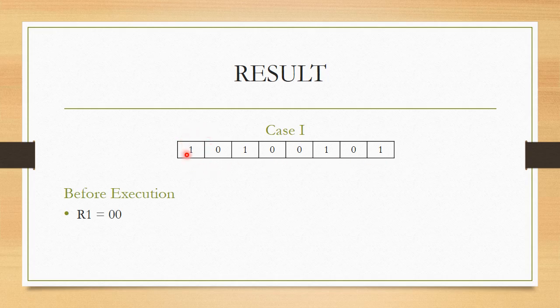Now, looking at the MSB of the given number which is equal to 1, this indicates the number is negative. Therefore, after execution the R1 value should be updated to 1. With this R1 should contain 01.